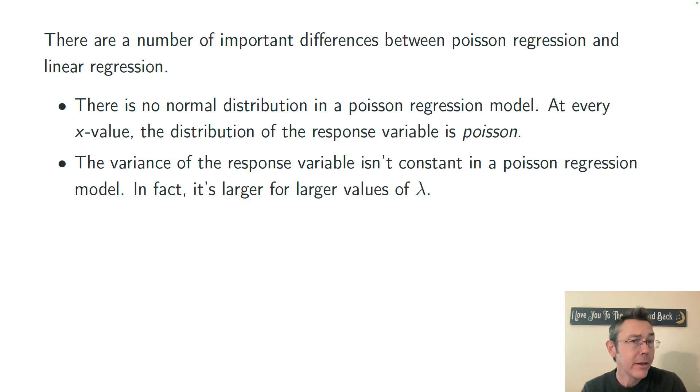Secondly, the variance of the response variable isn't constant in a Poisson regression model. In fact, it's larger for larger values of lambda. Technically, a Poisson distribution assumes that the variance and the mean are exactly the same. If that's not the case, then you think about potentially having over-dispersion or under-dispersion, which gets even deeper into the statistics here.